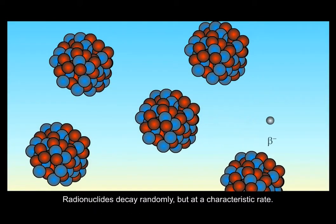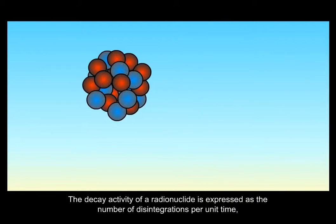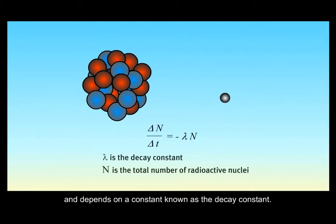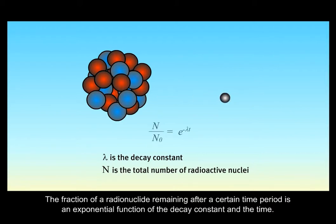Radionuclides decay randomly, but at a characteristic rate. The decay activity of a radionuclide is expressed as the number of disintegrations per unit time and depends on a constant known as the decay constant. The fraction of a radionuclide remaining after a certain time period is an exponential function of the decay constant and the time.